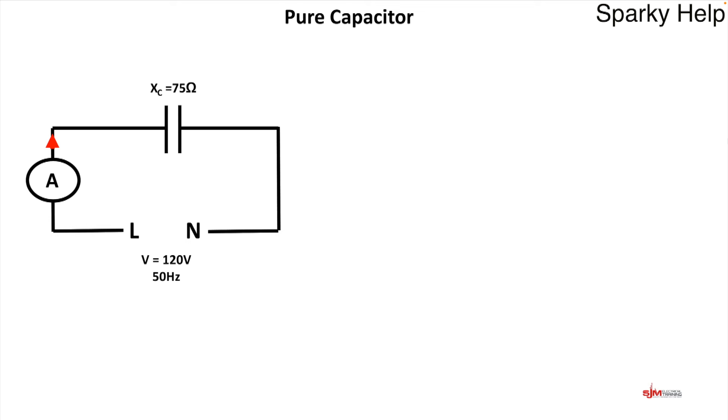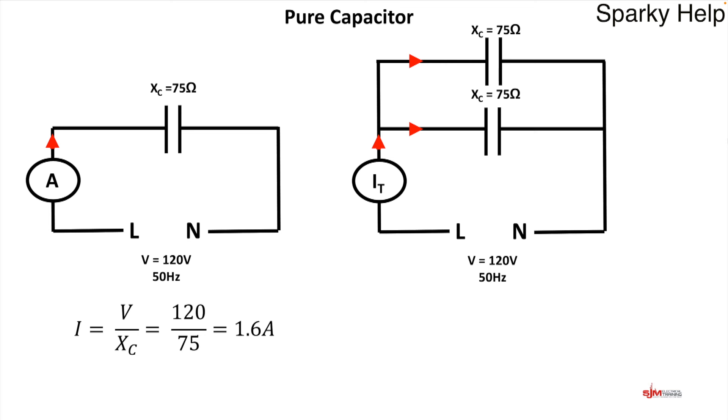Let's look at two basic capacitors then. First of all, let's look at an individual capacitor with an XC of 75 Ohms. If you wish to know more about capacitors, then check out my video, which hopefully should be appearing at the top of the screen now.